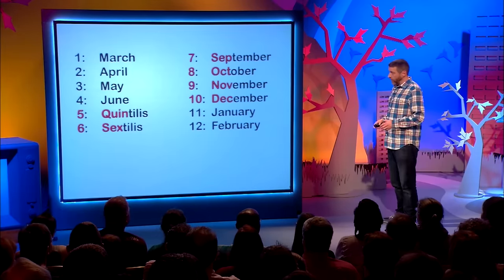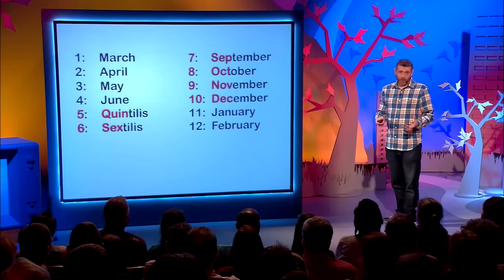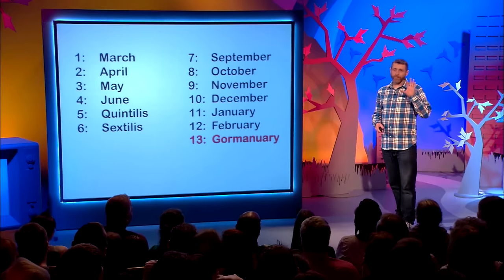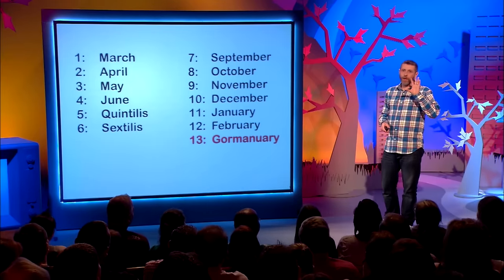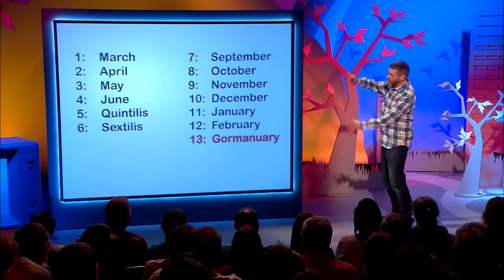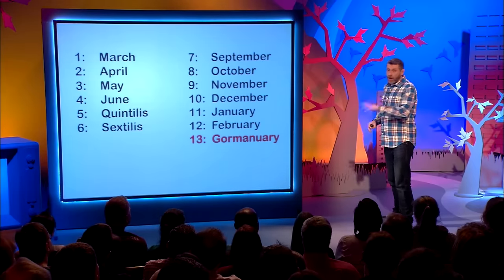Now, obviously, is the time we introduce the 13th month, which of course will be Gormannuary. No. What we've got there is 13 months of exactly 28 days long. Everything ticks over perfectly.